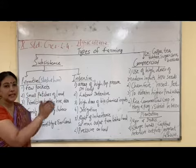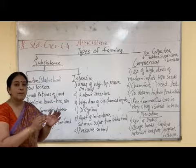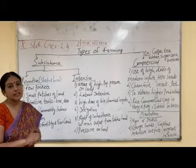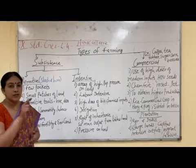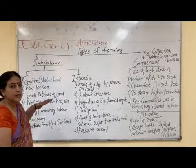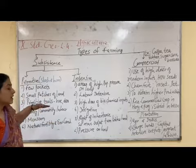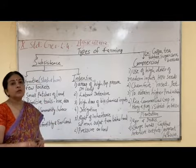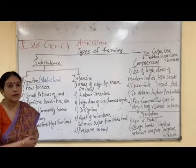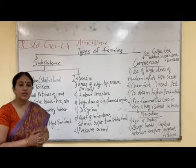Primitive subsistence is limited to few areas of the country. Here, small patches of land are cleared and cultivation is done. That is one feature of primitive subsistence agriculture — farming is done in a small piece of land. Primitive tools, meaning old tools, are used, like hoe and dao.